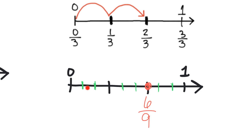How did I get that? Counting the highlighted spaces: one, two, three, four, five, six — there's the six. And the total pieces: seven, eight, nine. Six ninths.